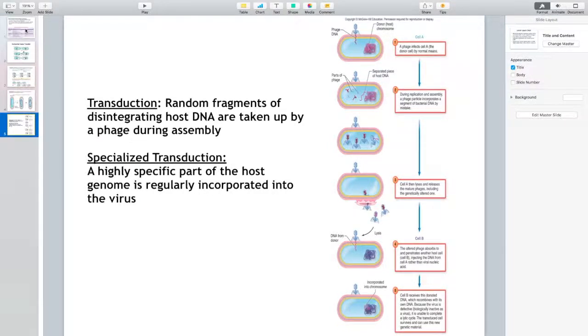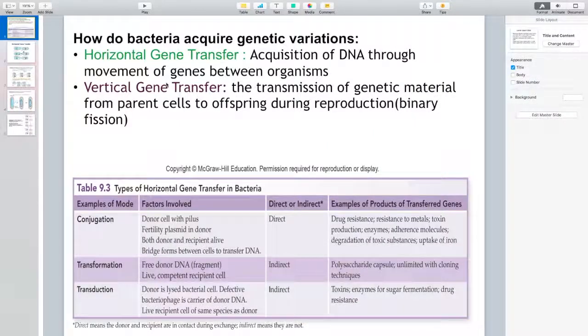So, again, various methods used by bacteria to acquire genetic variation. Conjugation, transformation, transduction, and here are various examples of the gene transformation that happen through conjugation. Generally, the change brings some drug resistance, resistance to metals, the heavy metals that are oftentimes used to control microbial growth, ability to produce some toxins,